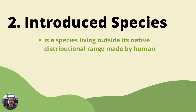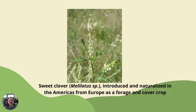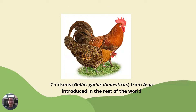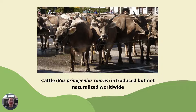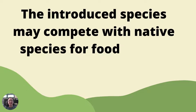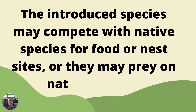Another cause is introduced species — species living outside their native distributional range, placed there by humans. Examples include the white sweet clover (Melilotus sp.), introduced into the Americas from Europe as a forage crop; wheat (Triticum), introduced worldwide from its place of origin in Mesopotamia; chickens (Gallus gallus domesticus) from Asia, introduced into the rest of the world; and cattle, introduced but not naturalized worldwide. Introduced species may compete with native species for food or nesting sites, or they may prey on native species, thereby endangering them.